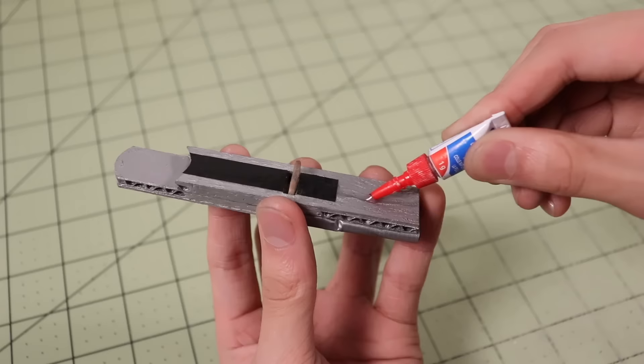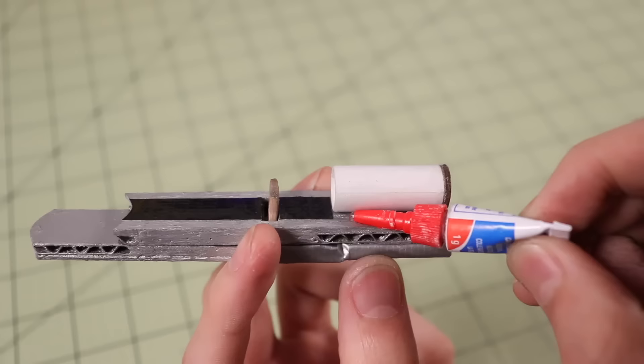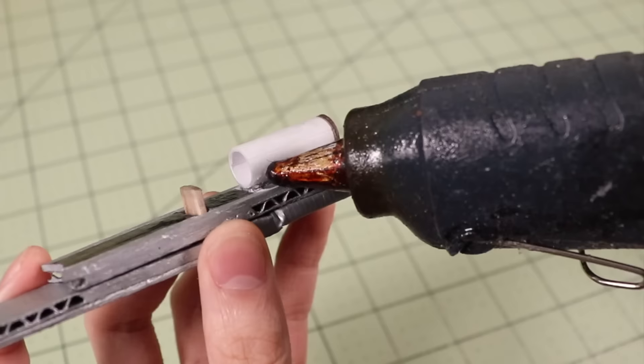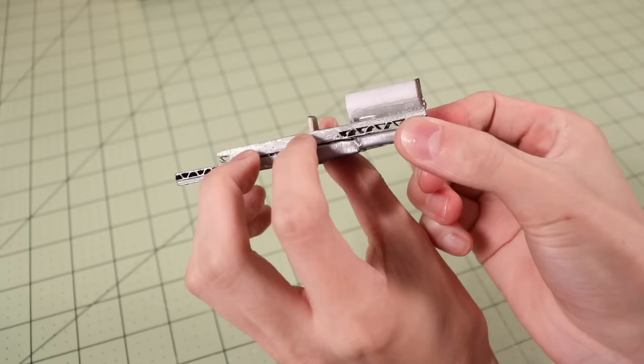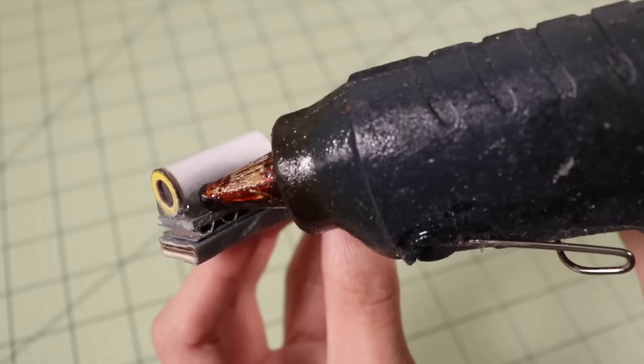Once that superglue dried I glued that ring to the barrel like so. Now I can glue the barrel to the web shooter right there. I made sure to use a lot of glue and even went in with a hot glue gun to really make sure this barrel doesn't come off.